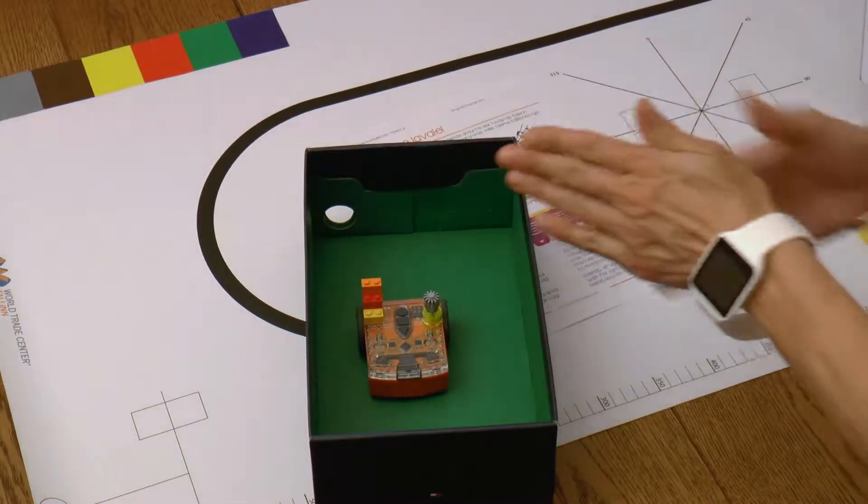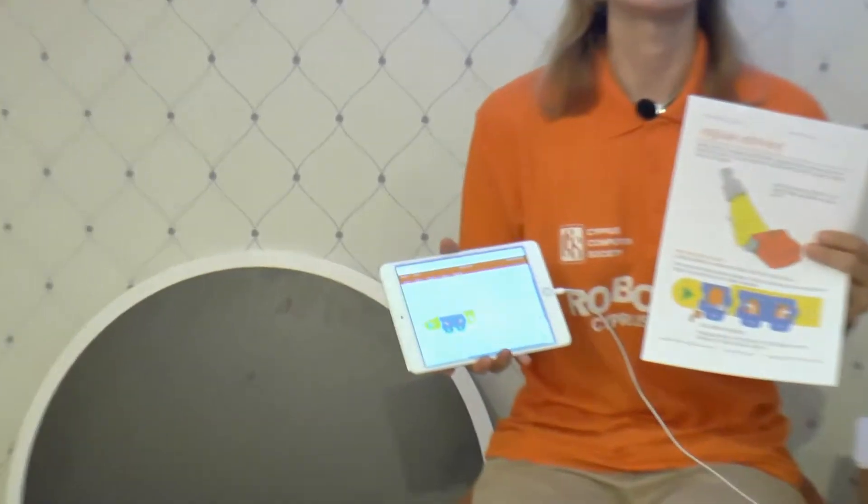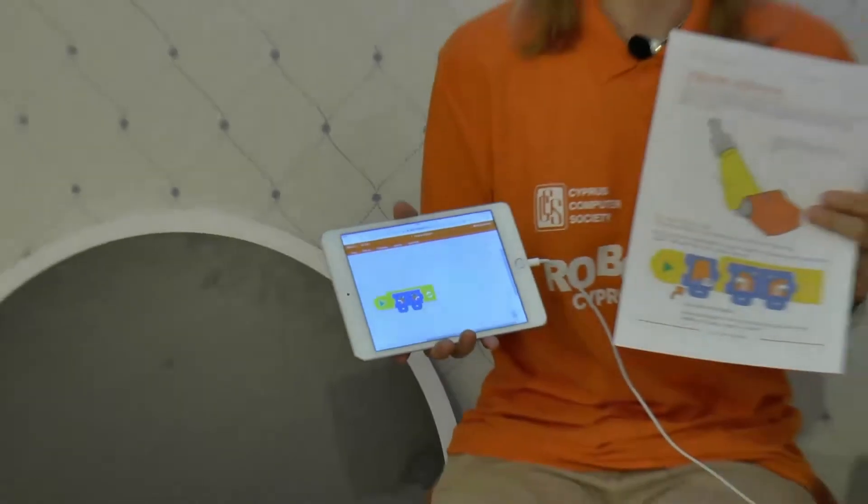In the last video, we made Edison react to light. In this video, we will create a program where Edison instead moves away from bright light. Also use worksheet number 22.